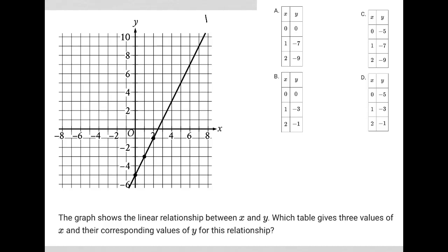This question is a diagram question — any question that provides some visual input. What we have here is a linear graph. The first thing I'm going to pay attention to is my y-intercept, which is negative 5. So basically when x equals 0, y equals negative 5. That's my y-intercept.